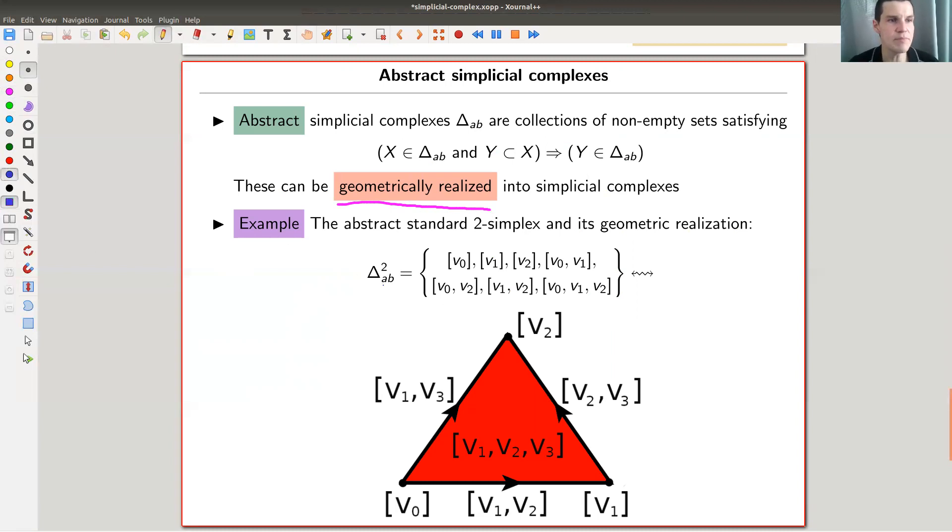So here's an example. AB means abstract version. And I can just say it's this collection of sets. And you might wonder, wait, wait, wait, these are not sets. Well, the convention is a little bit that they use those square brackets instead of curly brackets for sets. But anyway, let's ignore this. It's a collection of things. So v0, v1, v2, then v0 v1, v0 v2, v1 v2, and that's a collection of all of them.